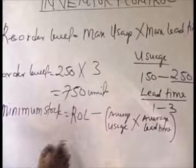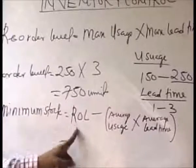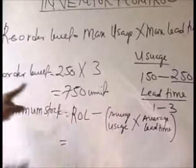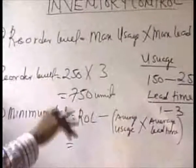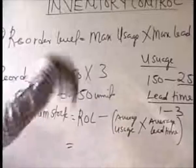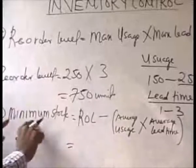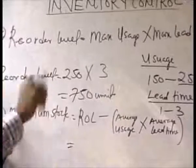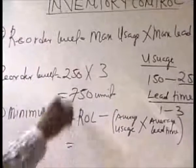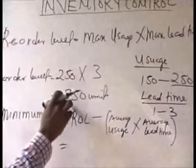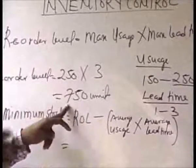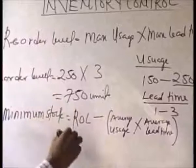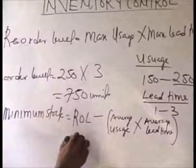So the formula equals our reorder level. Thank God we have just calculated the reorder level — we have to calculate it before we can get our minimum stock level. So our reorder level is 750.